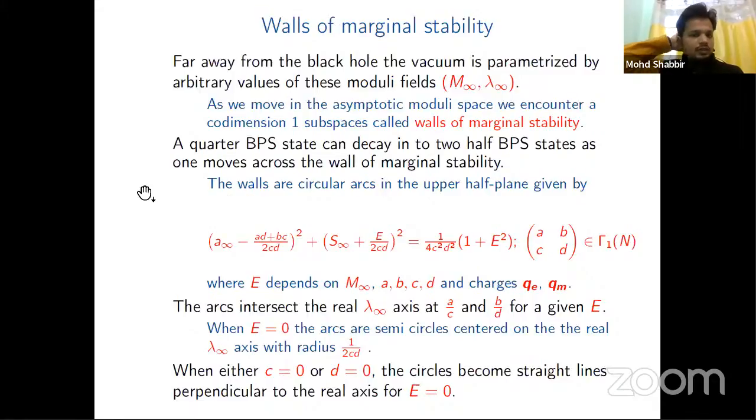Now the walls of marginal stability. Far away from the black hole, the vacuum is parametrized by arbitrary values of these moduli fields M_∞ and λ_∞, where infinity shows we're far away from the black holes. As we move in this asymptotic moduli space, we encounter a dimension one subspace called walls of marginal stability. A quarter-BPS state can decay into two half-BPS states as one moves across the wall of marginal stability. Here we get the equation of a circle which represents these arcs in the upper half plane.